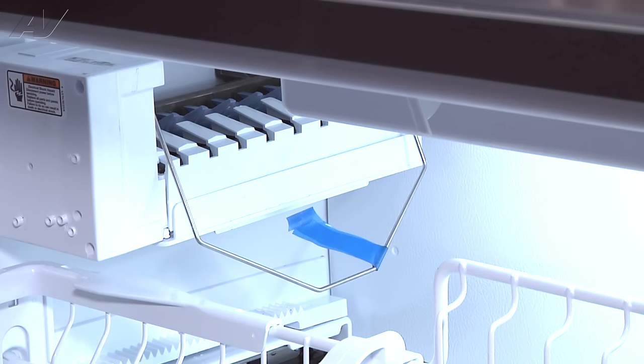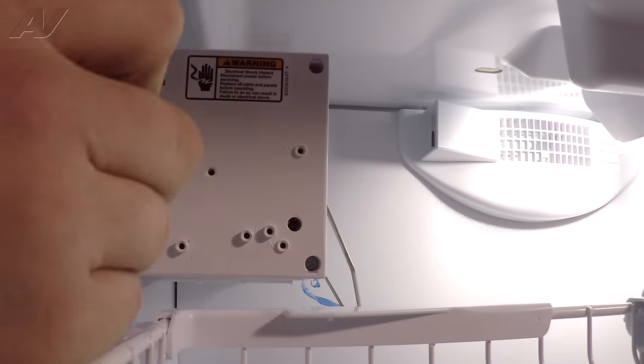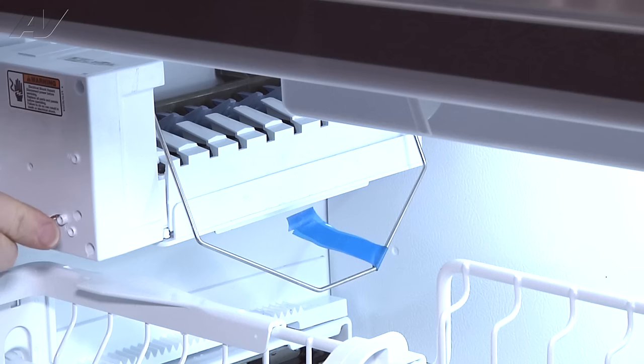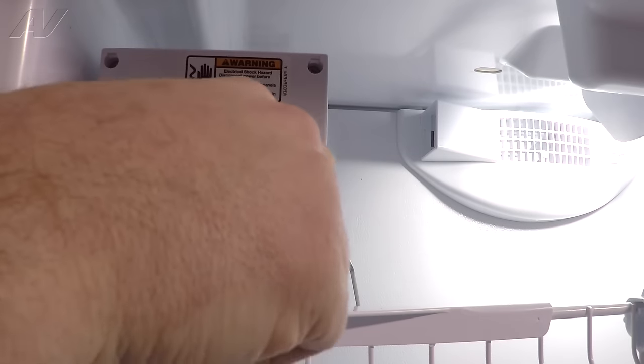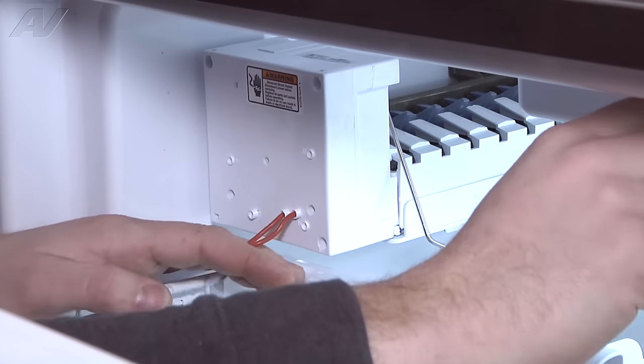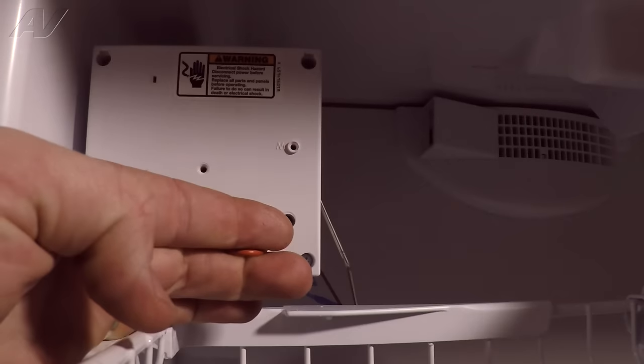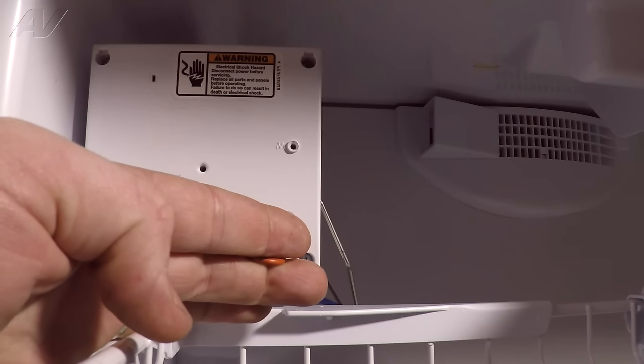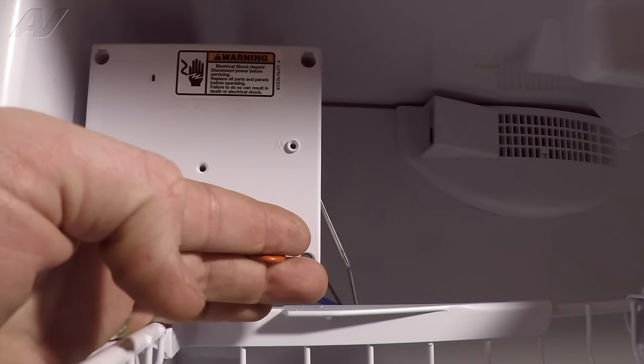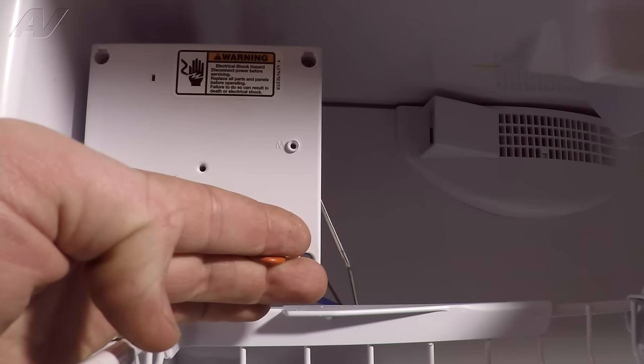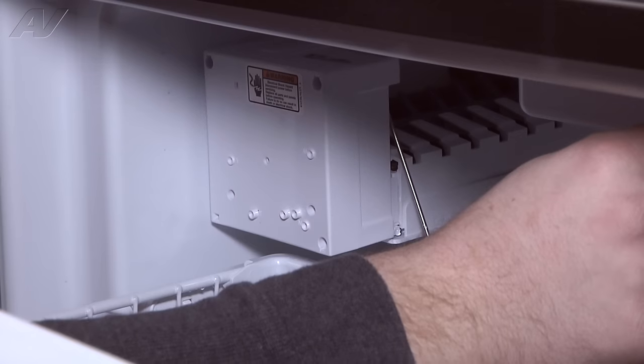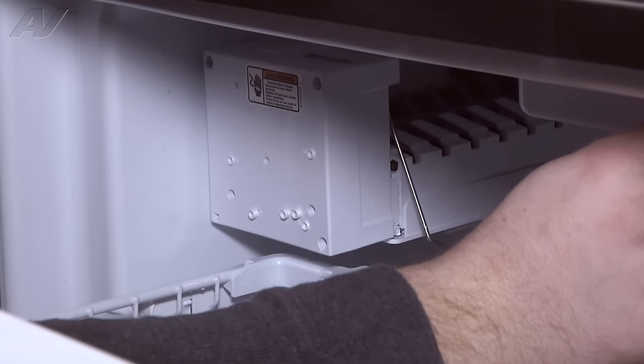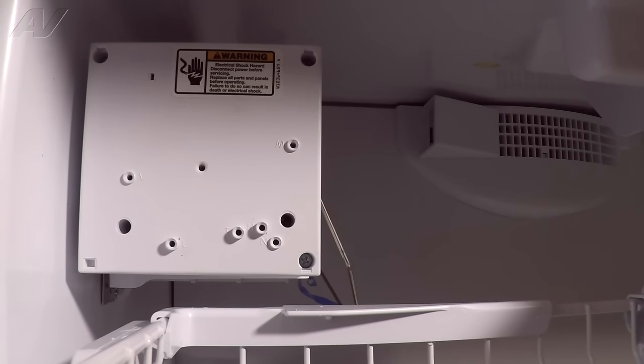Now we have the ice maker all hooked up back in place. We can go ahead and run it through another manual cycle by using the jumper wire and going to the T and H terminals. Then we need to close the freezer door switch. We're going to wait for the click. There's the click and the ice maker's run through the cycle. So we'll remove our jumper wire and make sure that it continues. We're just going to wait until it gets to the fill portion and see what happens.